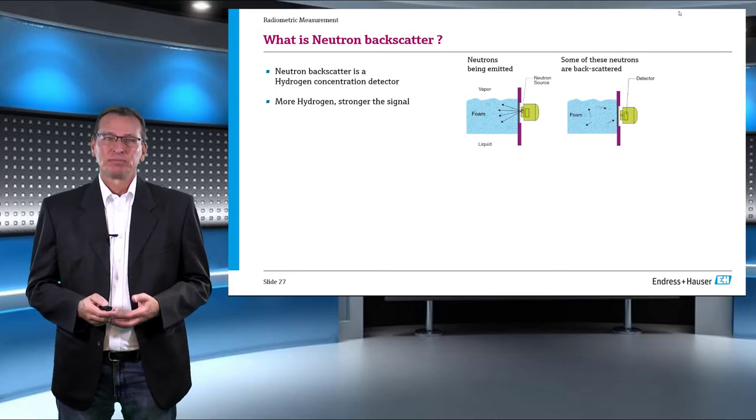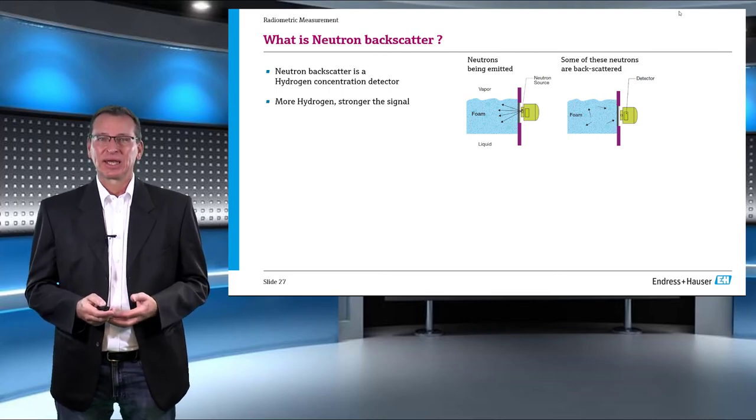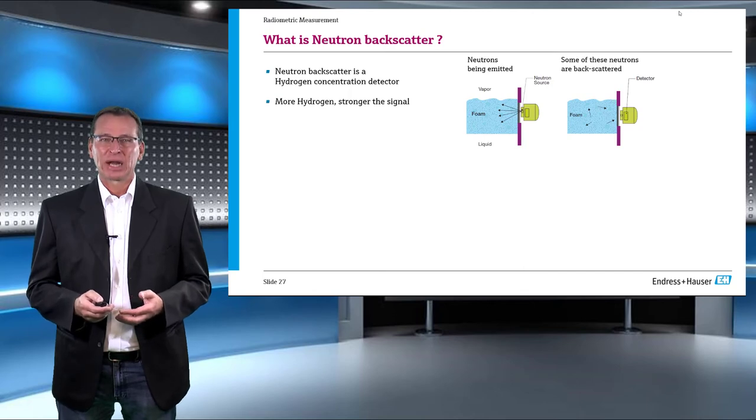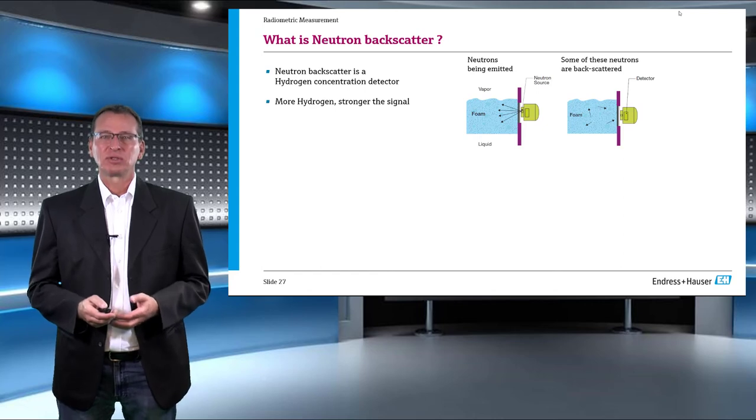The neutrons, because of their size and weight, get reflected back mostly from the hydrogen atoms present in the measuring media and are not affected largely by other larger molecules. Therefore, the more hydrogen content in the process, the stronger the backscattered signal.